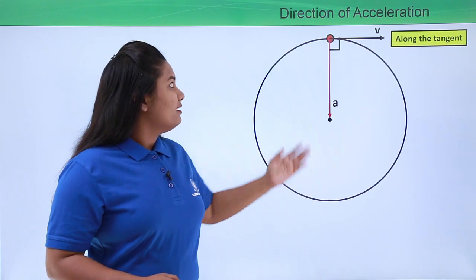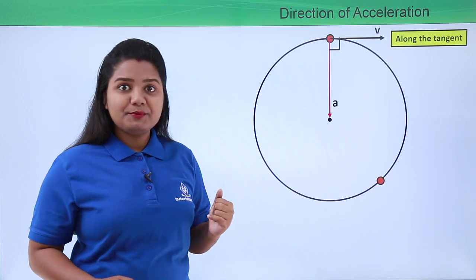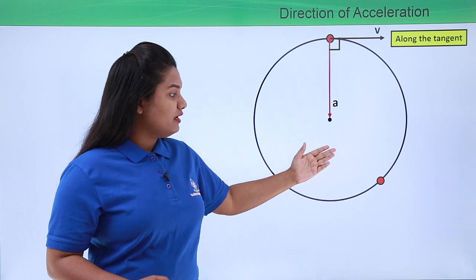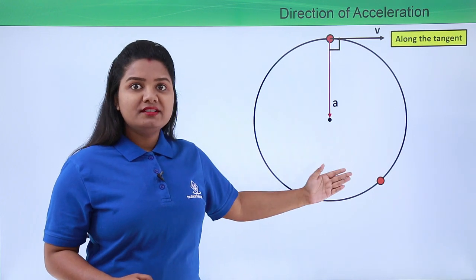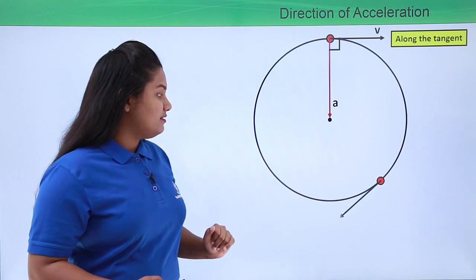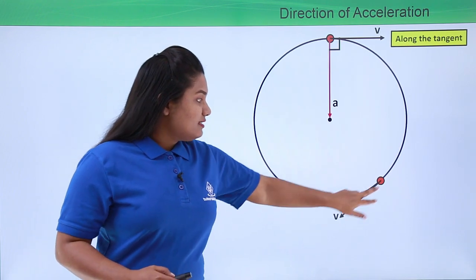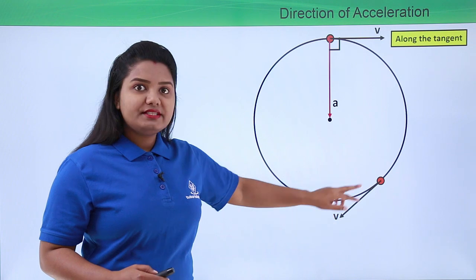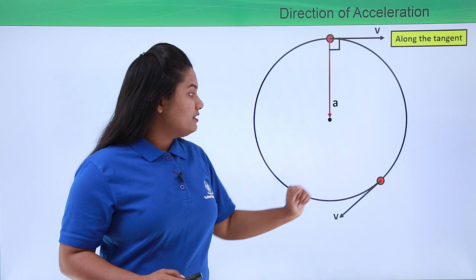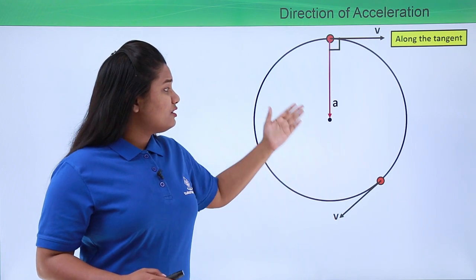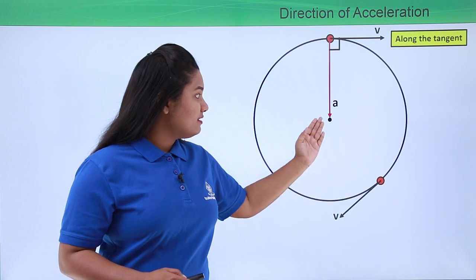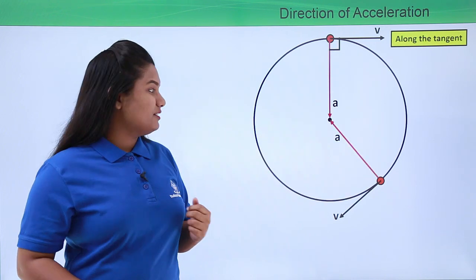Suppose the body is situated at another point at a certain instant. Even in this case, the direction of velocity will be along the tangent at that particular point. The direction of acceleration will be along the radius, directed towards the center.